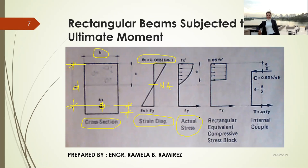Aside from that, we also have the figure for the actual stress, given by f'c on the compression side and fy on the tension side. However, in the design for a rectangular beam, we use the rectangular equivalent compressive stress block, considering only 85% of the compressive strength of concrete. Drawing the concrete stress block in three dimensions gives us the width of the beam and the value for A.